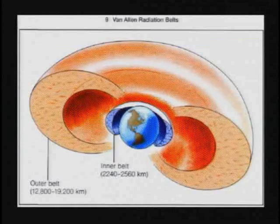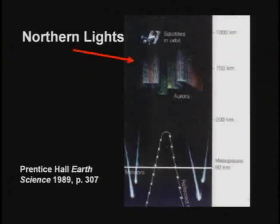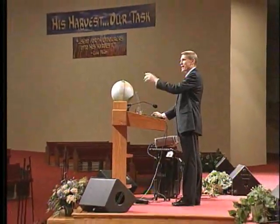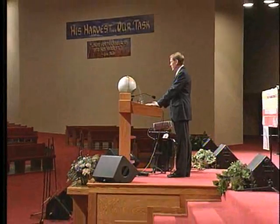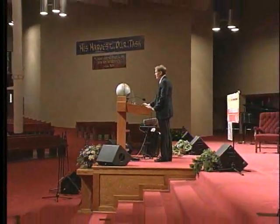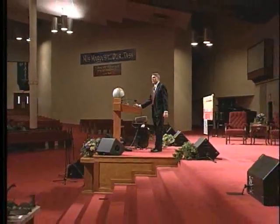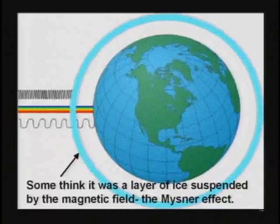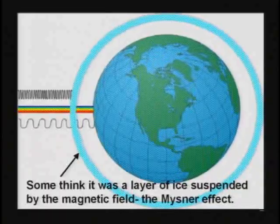The magnetic field would deflect super cold ice crystals to the poles, mostly. Super cold ice is also easily statically charged. The northern lights are caused by the Earth's magnetic field. The pre-flood world was very different — it probably had a canopy of ice or water above the atmosphere.